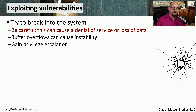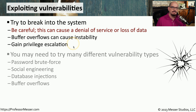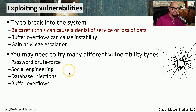Now it's time to perform the penetration test. Our objective is to try to take advantage of known vulnerabilities to gain access to a system. One challenge is that the process of exploiting a vulnerability could also cause that system or service to fail — this is why we document everything in the rules of engagement, so we're not bringing down critical systems. For example, during privilege escalation we might use a buffer overflow, but that process may cause an instability and crash the operating system. On a single system there might be multiple exploits to try: password brute force attacks, social engineering, database injections, or buffer overflows. Some vulnerabilities require direct system access, while others like social engineering may be done entirely over the phone.